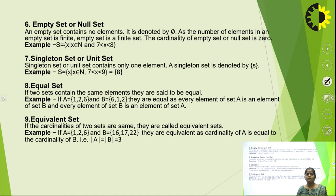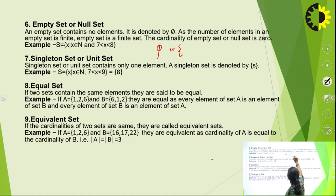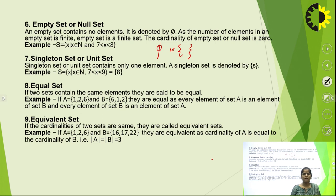The sixth type is the empty set or null set — a set which contains no elements. It is denoted by the symbol φ (phi) or by empty curly braces {}. For example, the set of natural numbers greater than 8 and less than 9 is a null set, because there is no natural number between 8 and 9.